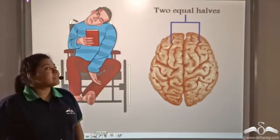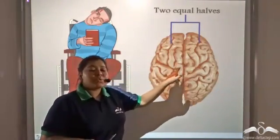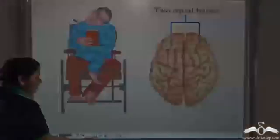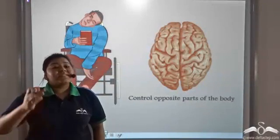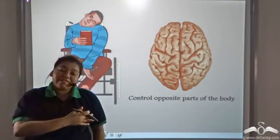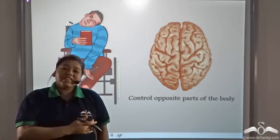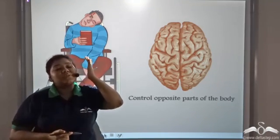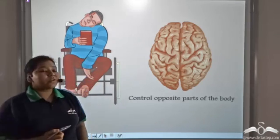This is because cerebrum has two equal halves. From this situation, we can predict that the right half of the cerebrum controls the left side of the body and vice versa. The left half of the cerebrum controls the right half of the body.